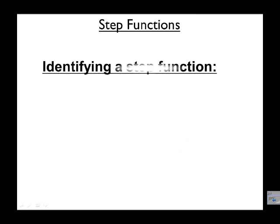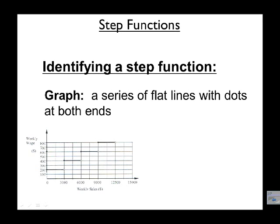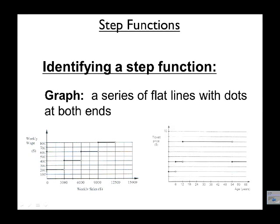Let's take a look at how you could identify that you have a step function. It's really quite easy. If you're given a graph, you'll notice that your graph is a series of flat lines with dots at both ends, like these two. Again, we see the flat lines, and then at each end we've got a dot, same as both cases.